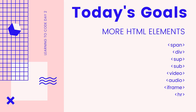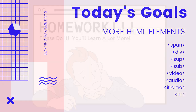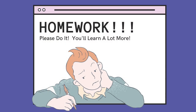We'll also cover some less exciting but equally or probably more important elements like spans and divs, and then some oddballs — superscript, subtext, and horizontal rules. And just like yesterday, there will be a homework assignment at the end.